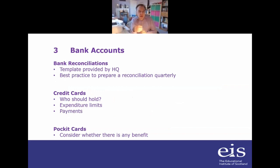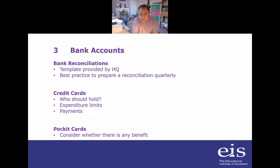Bank reconciliations: what I mean is a reconciliation between the bank balance on the bank account and your cash book spreadsheets. It's best practice to prepare such a reconciliation quarterly. The main things to watch out for are bank charges that go straight into the bank account — you won't have an invoice for them necessarily — direct debit payments, and any slight differences between what's on an invoice and what's actually being paid. It's very good practice to make sure your cash book spreadsheets are in line with your bank statements on a regular basis.